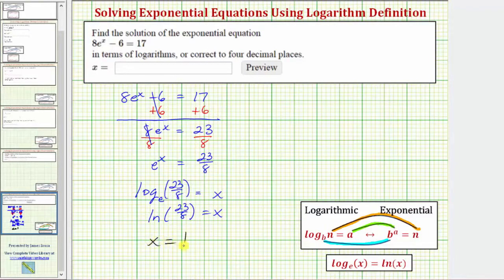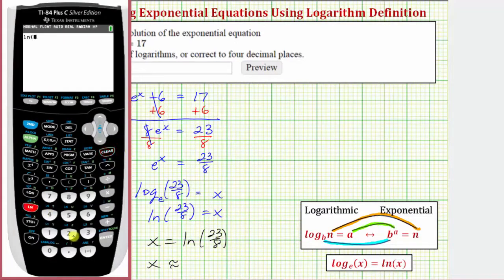Or x = ln(23/8). Let's also get our decimal approximation for x. Using the calculator, we'll enter natural log 23 divided by 8, close parenthesis, and enter. To four decimal places, x is approximately 1.0561.